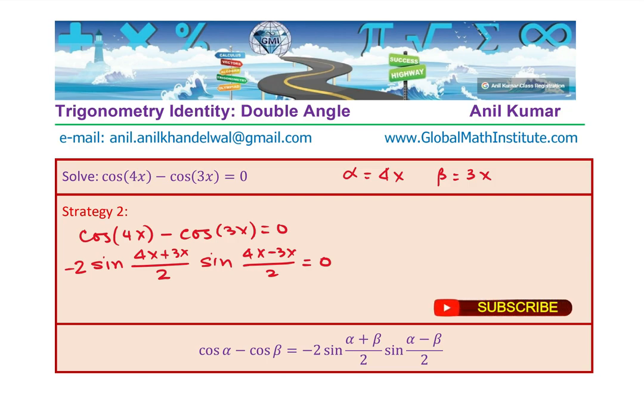As soon as you write them as a product, they are like factored form. Straight away, we have our solution and that is either this term is 0 or that. Which is minus 2, sine of 4 plus 3, 7x by 2, and we have sine of minus 3 from 4, you get x by 2 equals to 0.